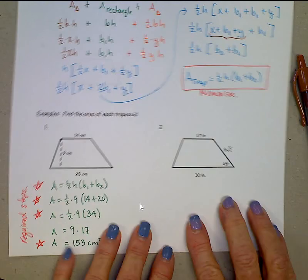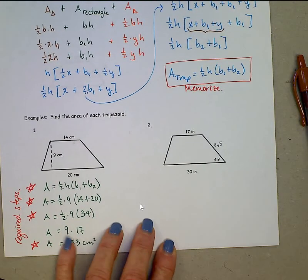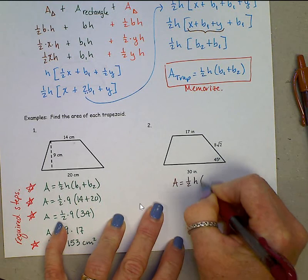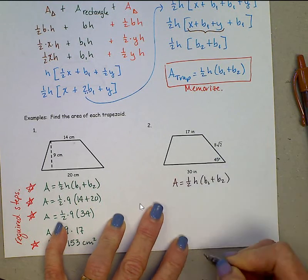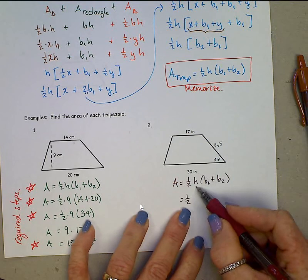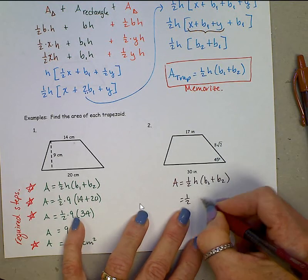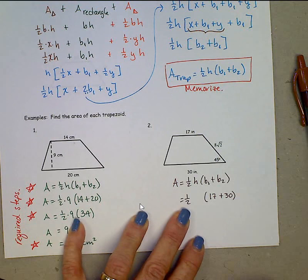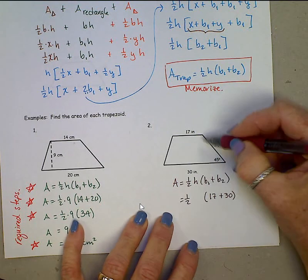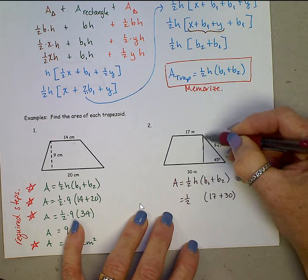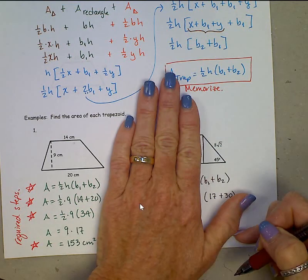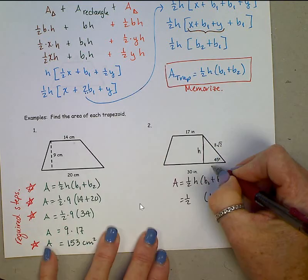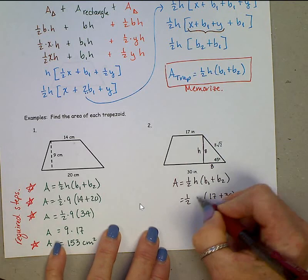Alright. Look at this next one. We want to find the area of this trapezoid. Again, we write the formula to start. Area is 1 half height times base 1 plus base 2. 1 half. Ooh, height. We don't have that. I'm going to leave a space for it right now, because I'm going to fill in the bases, which we do know. 17 plus a 30. To find the height, go back up here to this trapezoid and draw in a height. And we see a 45, 45, 90 right triangle. The hypotenuse 8 square root 2. Sides are 8. There's your height.